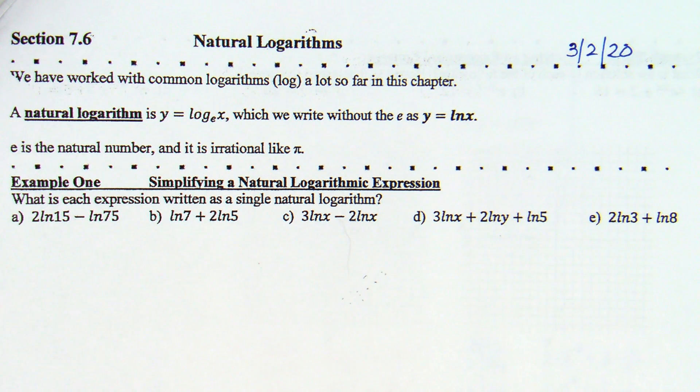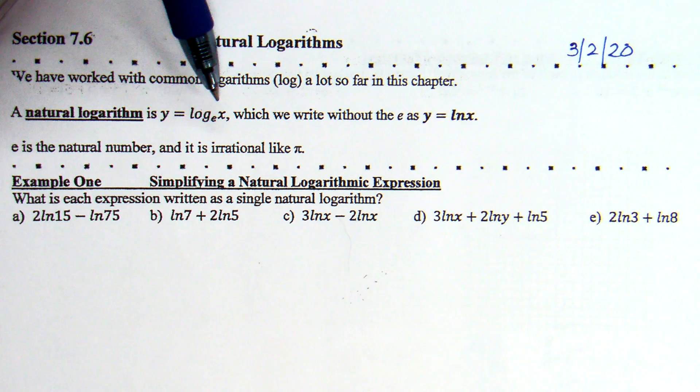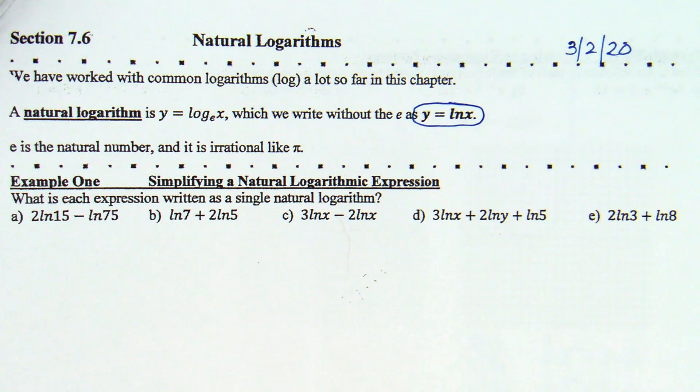As it says, I think I've mentioned everything here. We've worked with common logs a lot so far this year. Natural logarithm, it could be written as Y equals log base E of X. But I don't think you'll ever see that because log base E is better written as natural log of X. So, Y equals ln of X. E, again, is the natural number, that 2.718, and it's irrational just like pi.